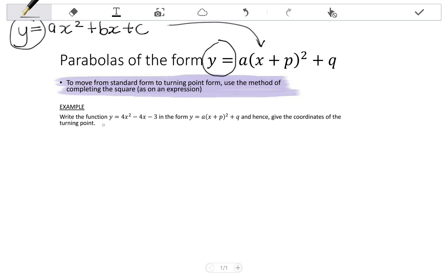So if we look at this example, it says write the function y equals 4x squared minus 4x minus 3 in the form y equals a times x plus p all squared plus q. And hence, remember, hence means to use the previous answer or previous question, give the coordinates of the turning point.